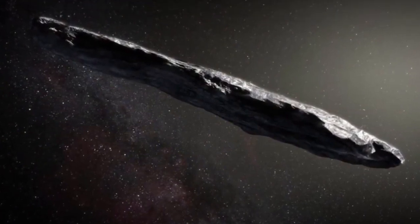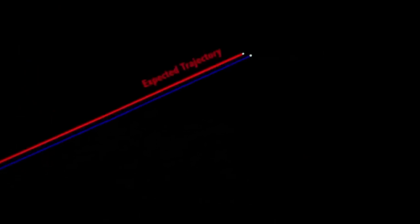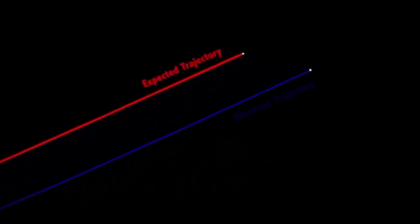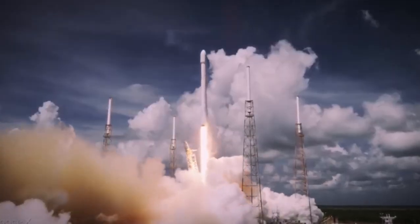Indeed, Oumuamua presents a formidable presence. In the autumn of 2017, this minuscule object, named 1I Oumuamua, traversed the inner solar system, approaching close to the Sun. Its distinction as the first known object originating from a solar system other than our own bestowed upon it historical significance.